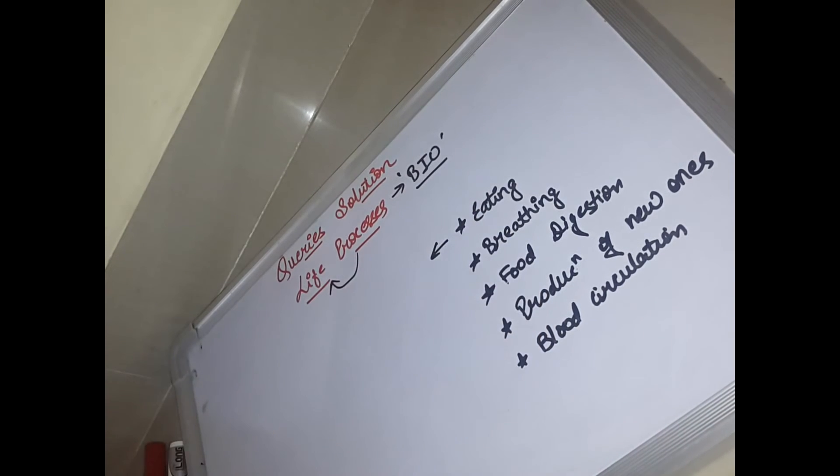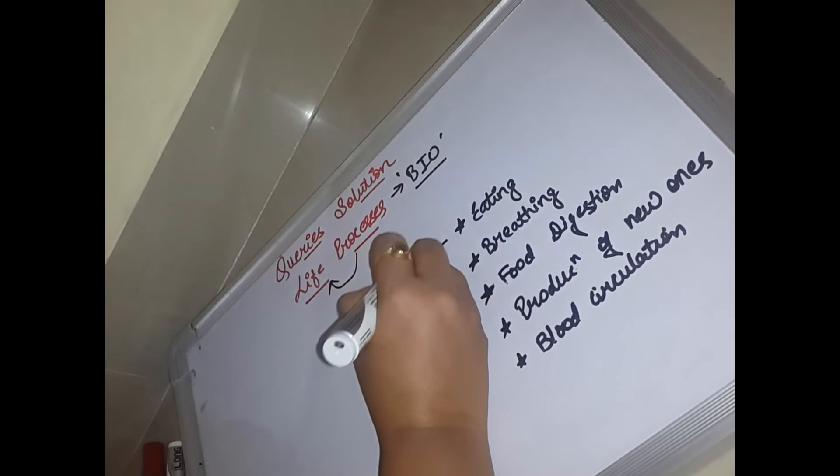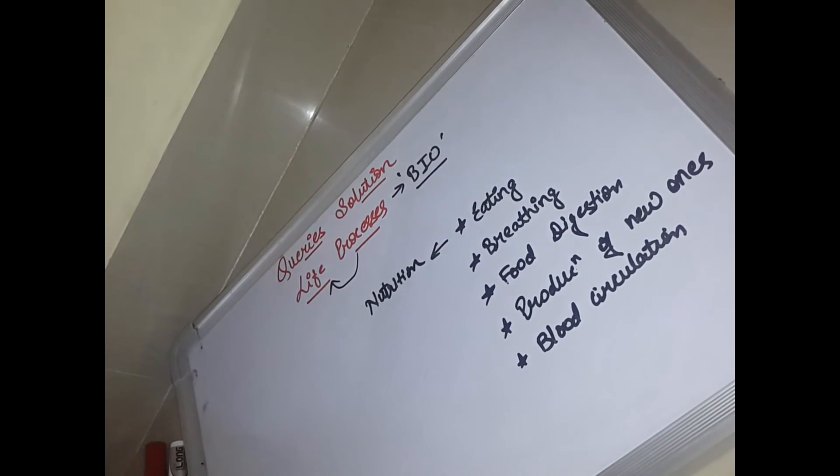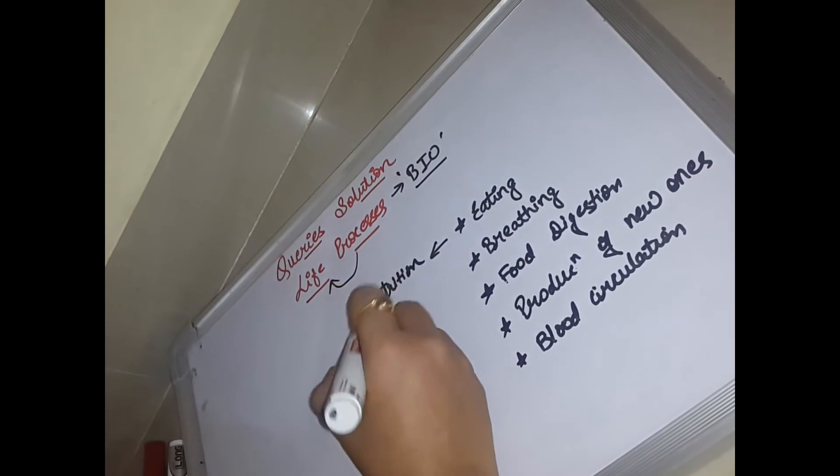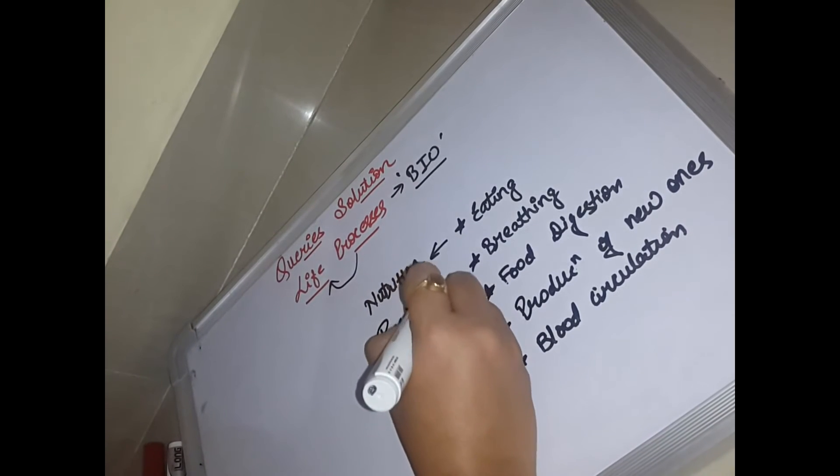If we will consider the example of eating, so the process through which we eat food is known as what? It is not known as digression, rather it is known as nutrition. The process of exchange of gases is known as what? It is known as respiration.